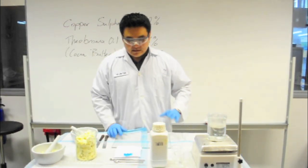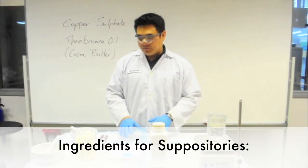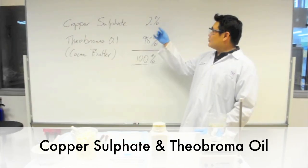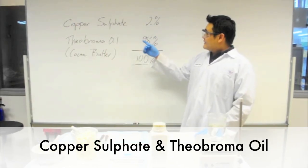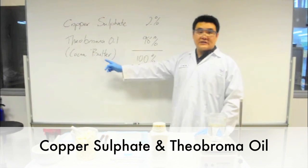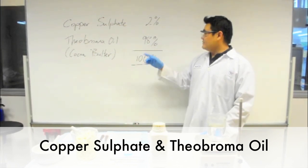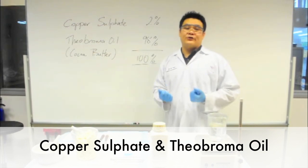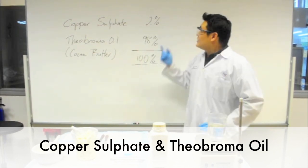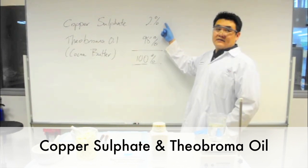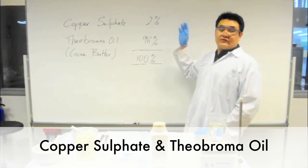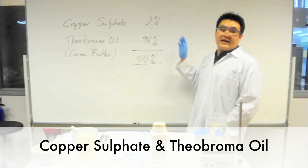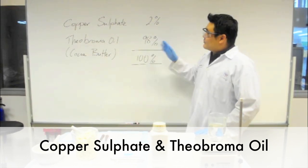So, first of all, just a bit on the ingredients. Copper sulfate suppositories. The formulas are here. All you need is 2% copper sulfate. Then your theobroma oil, which is also known as cocoa butter, 98%, which makes up 100% of the formula. So for example, if we are going to make 10 grams of suppository mix, you need 0.2 grams of your copper sulfate and then 9.8 grams of theobroma oil.